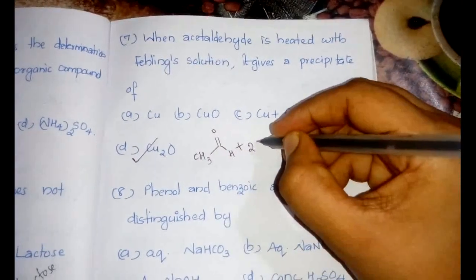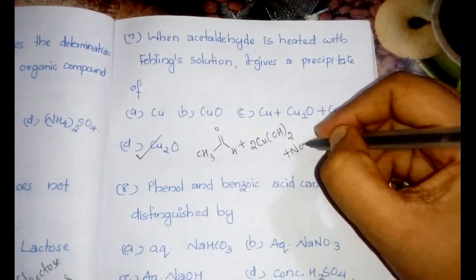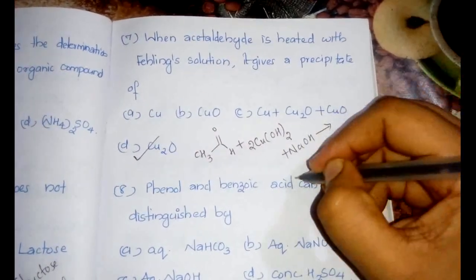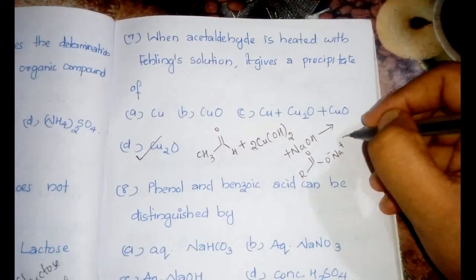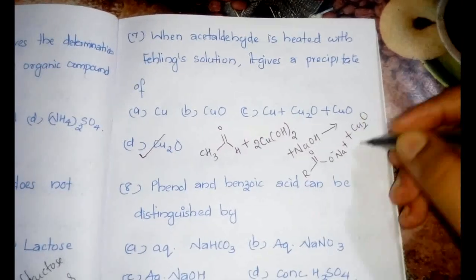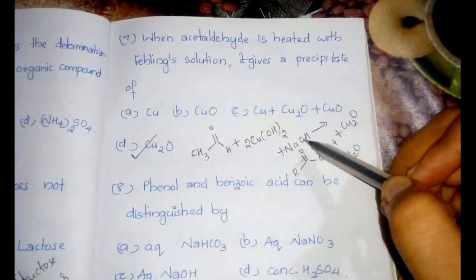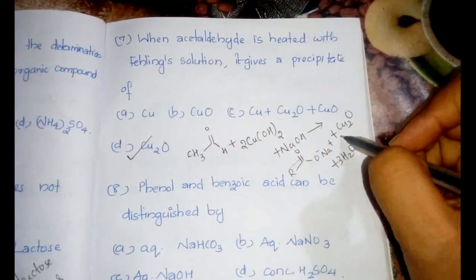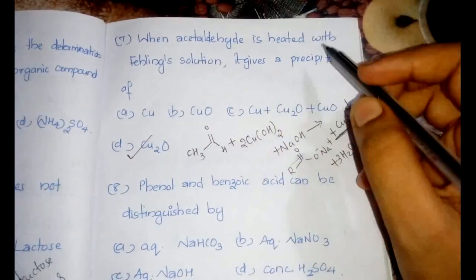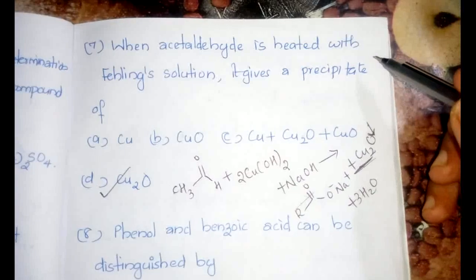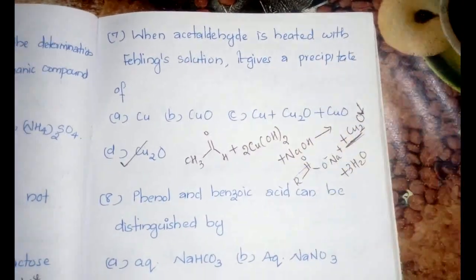The aldehyde when it reacts with Fehling solution, the copper solution with NaOH, is going to form the ion plus Cu2O plus 3H2O. So this is the equation and as we can see, Cu2O will be precipitated. With all the other compounds other than aldehyde, it will not give the precipitate and therefore will not give the Fehling's test as well.